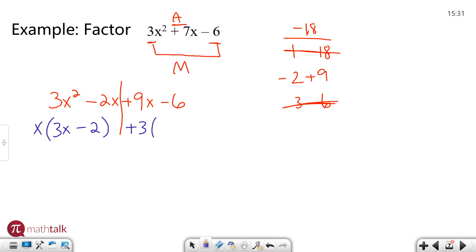So if I take 9x and divide it by three, I get left with 3x. If I take negative six and I divide it by three, I get negative two. And that's really important because what happens is if you notice both of these parentheses are the same.